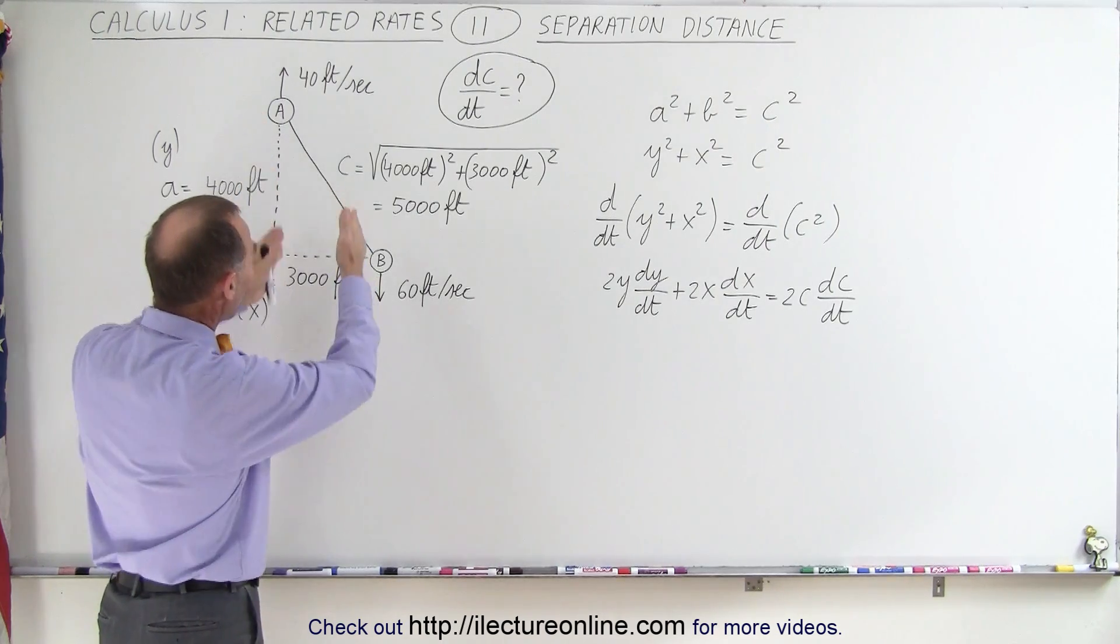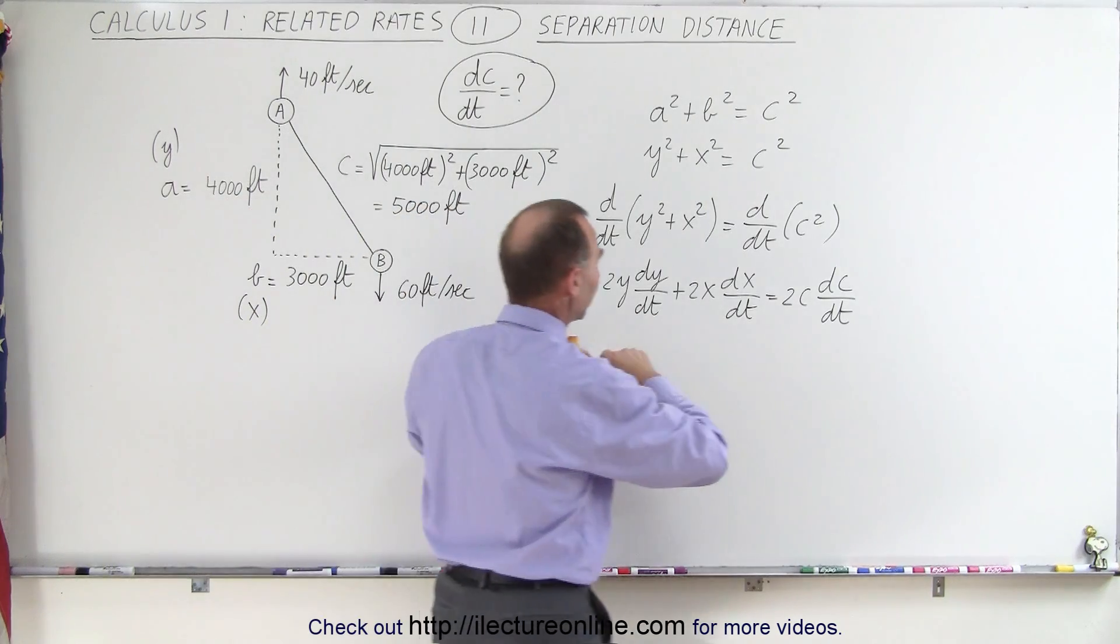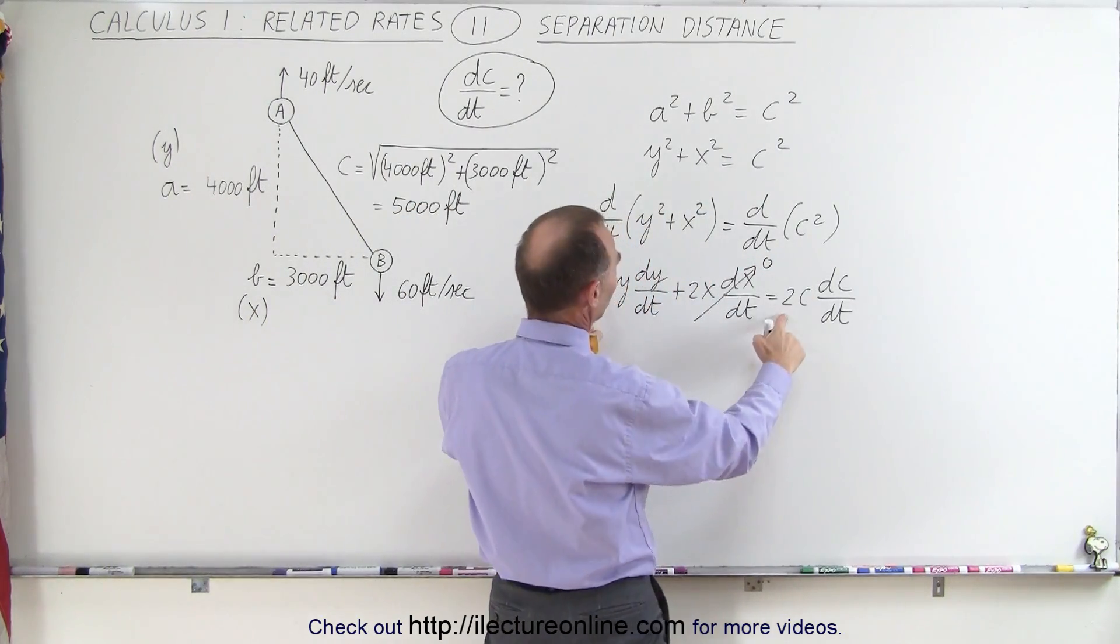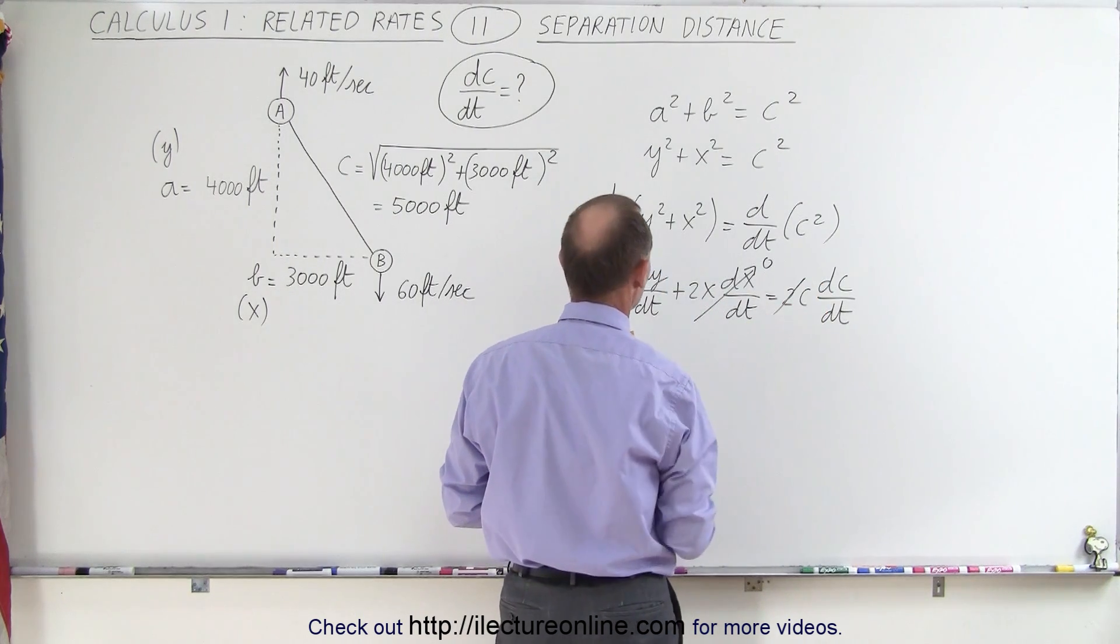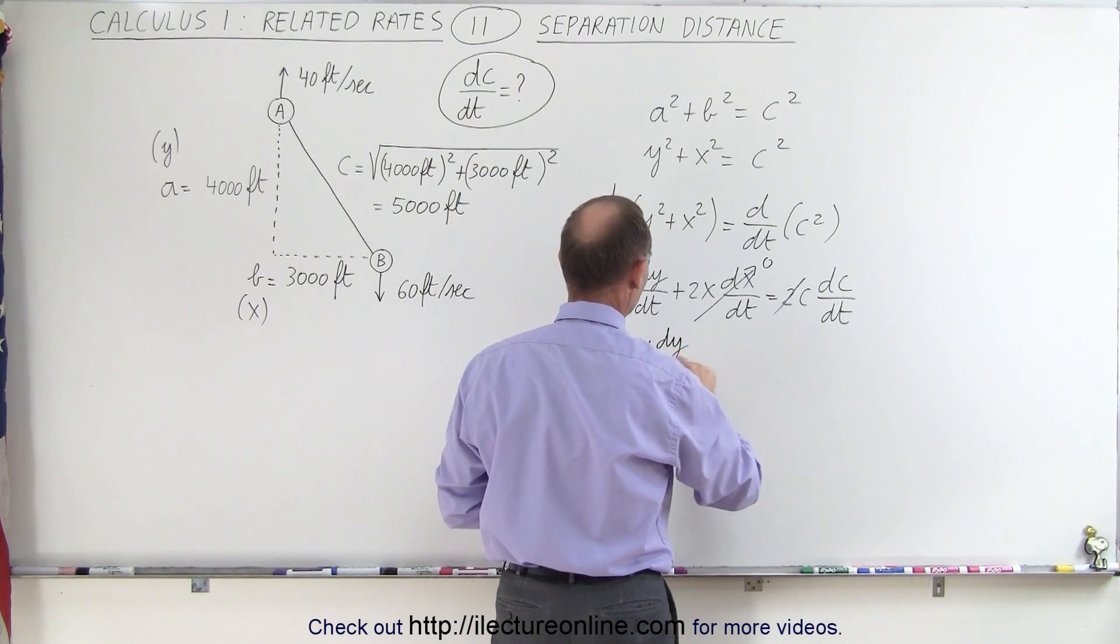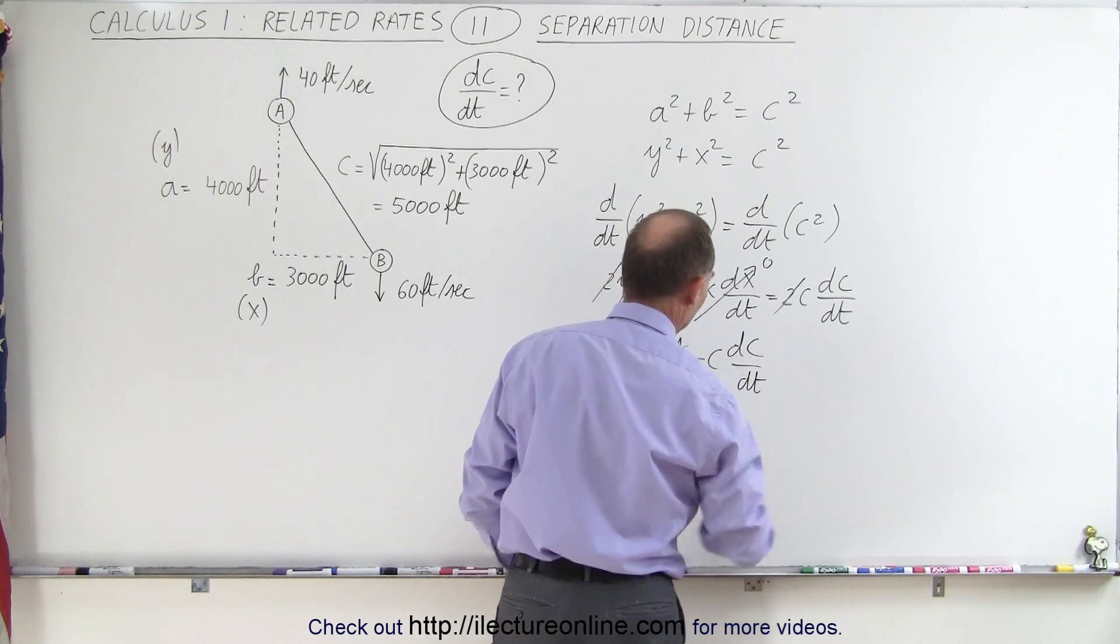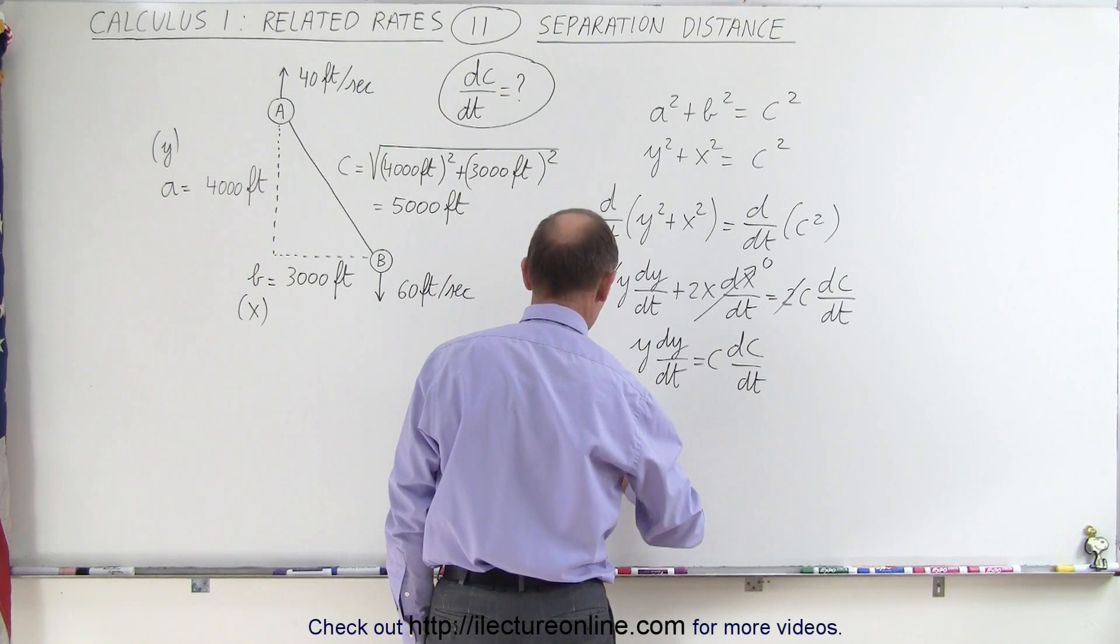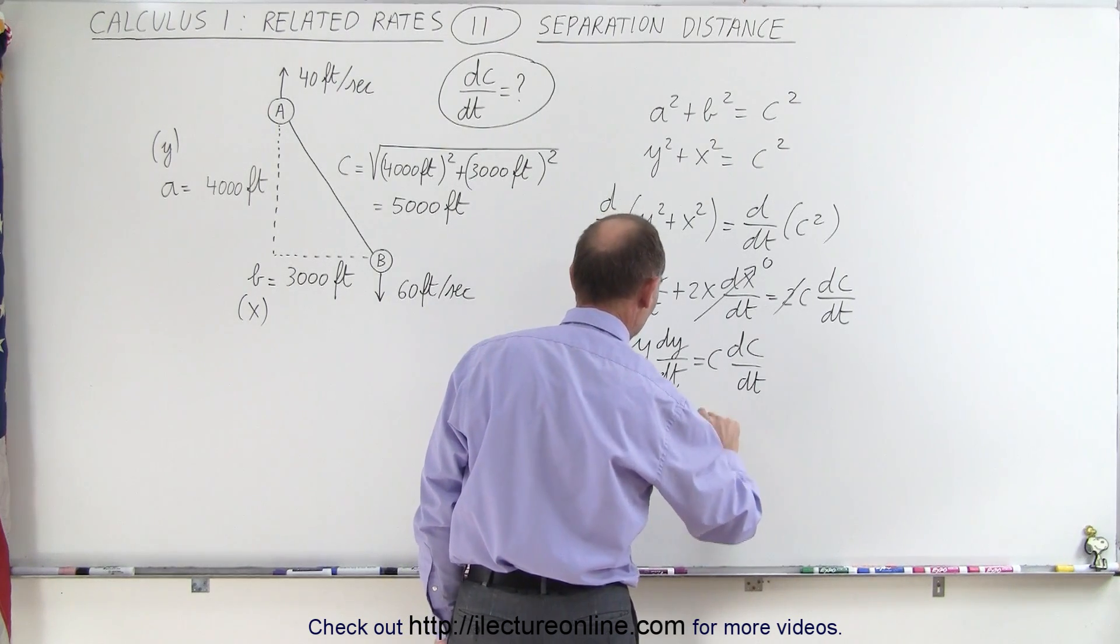There's only movement in the Y direction, so we only have a dy/dt. So that means that this term disappears. This is equal to 0. And we can also see that both sides of the equation can be divided by 2. So the 2's disappear, which means that we have Y dy/dt is equal to C times dC/dt. And since we're looking for dC/dt, we can write that dC/dt is equal to Y over C times dy/dt.